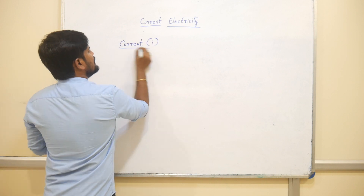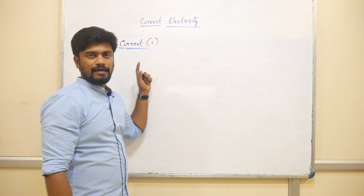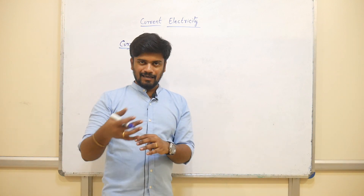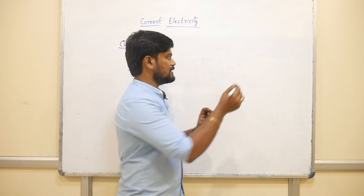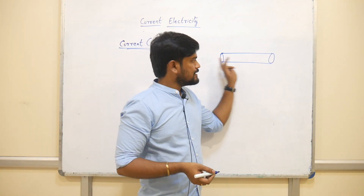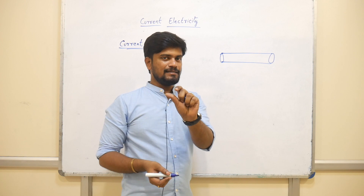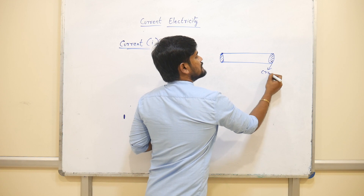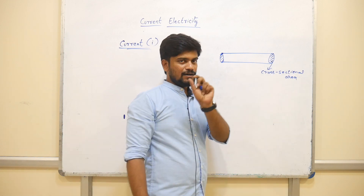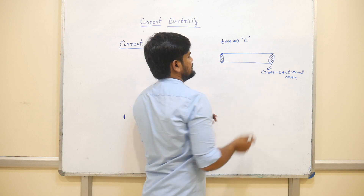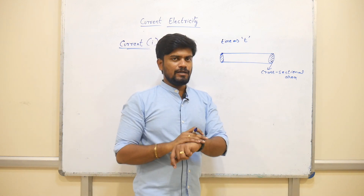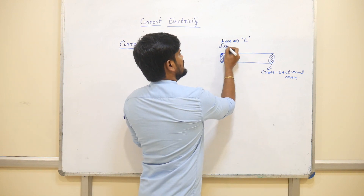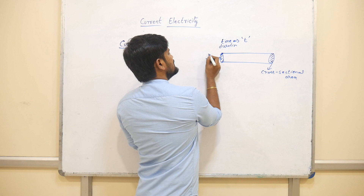Current is generally denoted by the symbol I. Now, consider a wire in which current is flowing. This wire has a cross-sectional area. In time duration t, we look at what passes through this cross-section — let's say a charge enters.